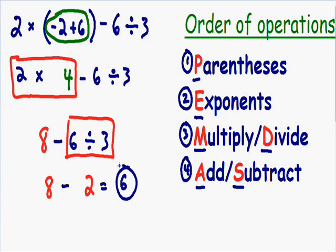Our final answer for this expression is 6. I hope this gave you a better idea of order of operations. In my next video I'm going to go over a more difficult example with more parentheses and exponents, so stay tuned. I really hope you're enjoying these, and I will see you in the next one. Thank you.